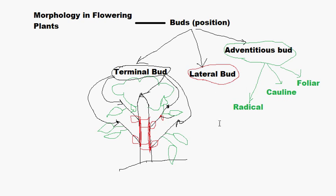So that was about buds based on position. Why do we say it is based on position? Because the terminal bud specifies the position at the terminal point; lateral specifies position at the lateral area; and adventitious specifies position to be areas other than the nodal areas. Even within adventitious, radical specifies the roots, and cauline specifies the stem. So we are specifying the position for all these classification categories — that is why we call it classification of buds based on position.